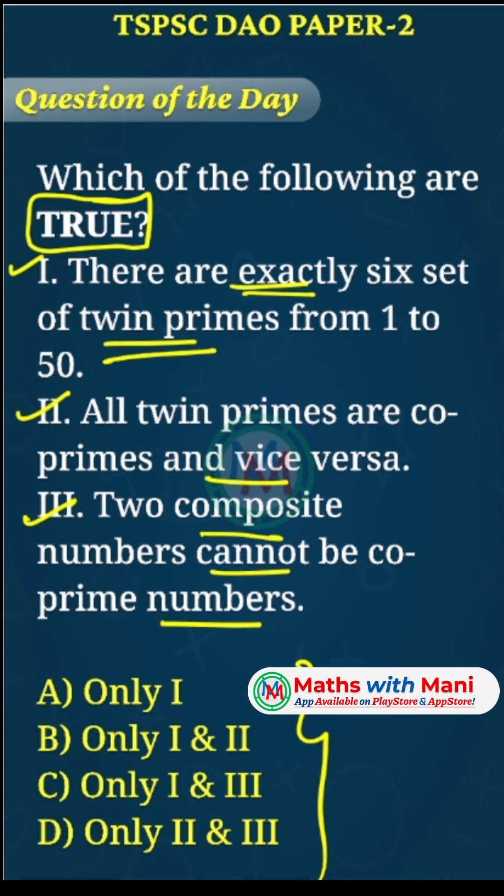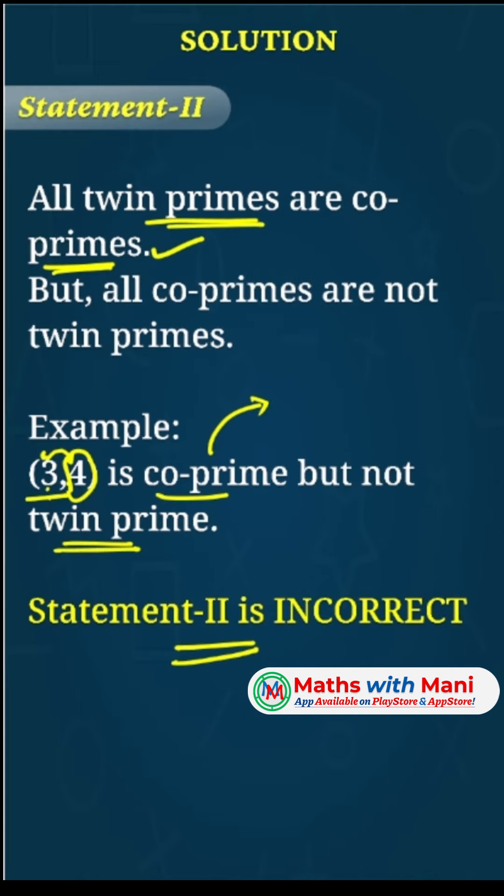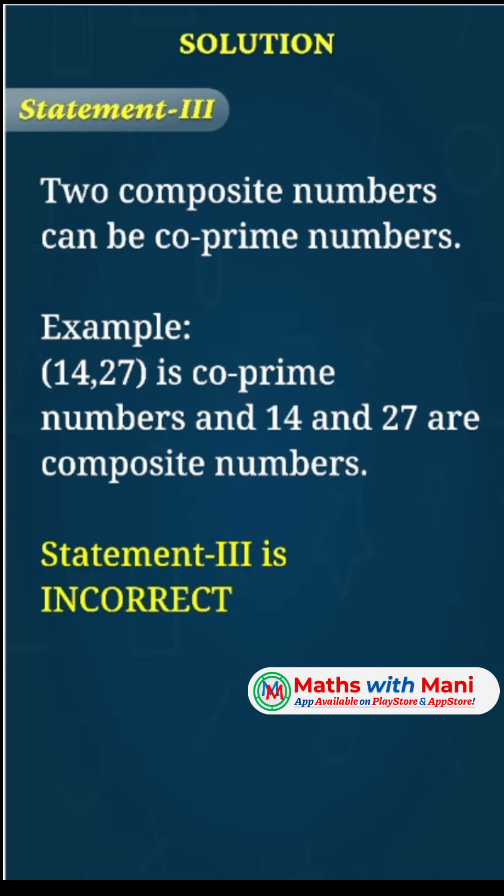Coming to the third statement: two composite numbers cannot be co-prime numbers. For co-prime numbers, the HCF should be 1. Can composite numbers be co-prime? Definitely, two composite numbers can be co-prime numbers. Let's take an example: 14 and 27 are co-prime because the HCF of these two numbers is 1.